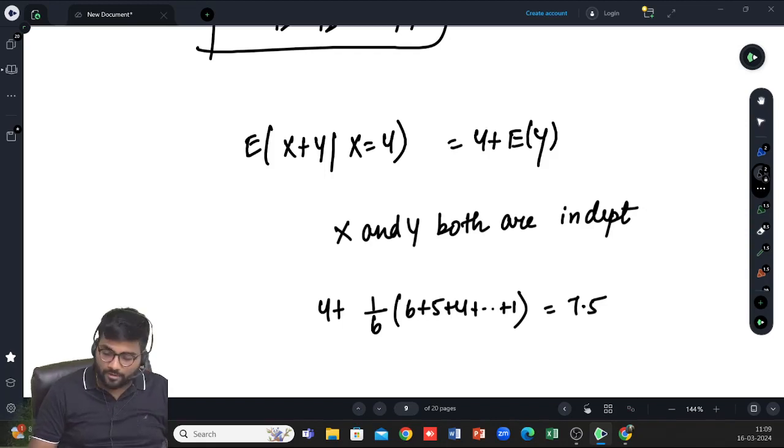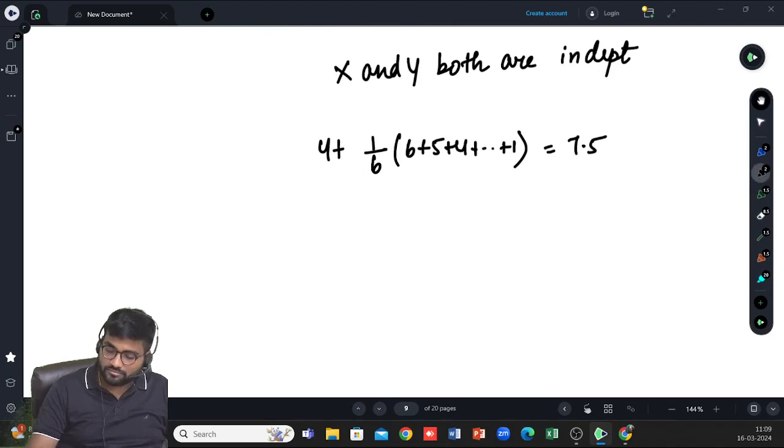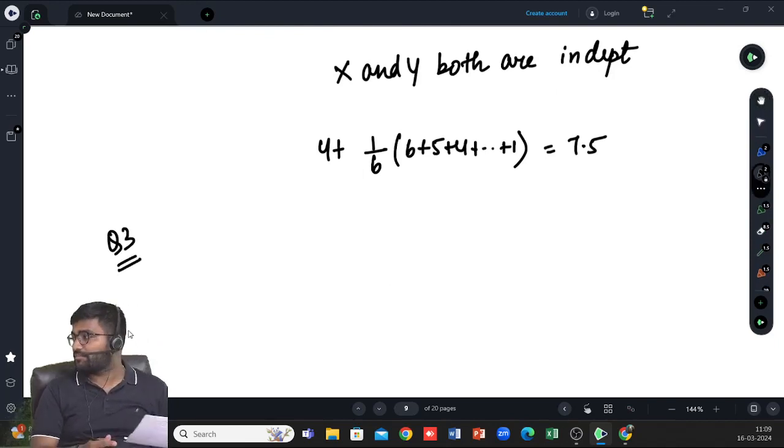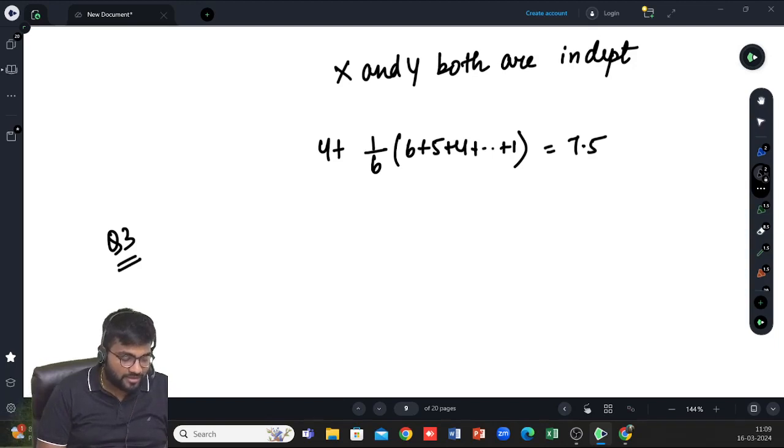Question number 3. The following data are available on three television factories that produce all the televisions used in a country. Defect probability is given. Television is selected at random and found to have a defect. Identify which one of the following expressions gives the required expression to correctly calculate the probability that a selected television was made in factory B. So basically selected television was made in factory B. So defect given made in B into made in B whole divide by total. This is answer number two.